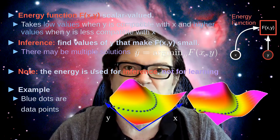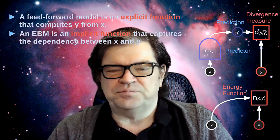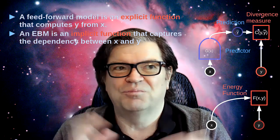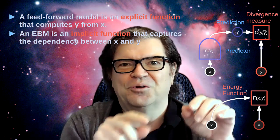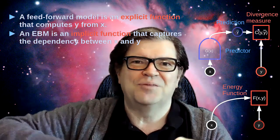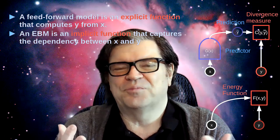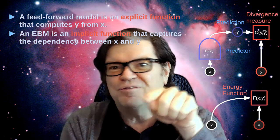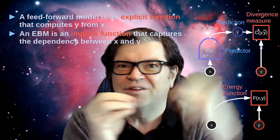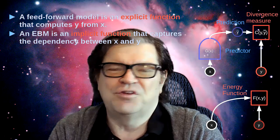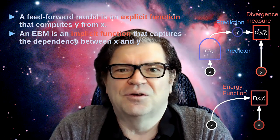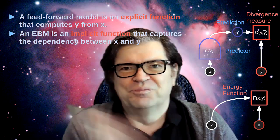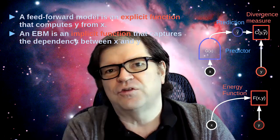If you want to build or train an energy-based model, we have to find a way to shape the energy surface so that it gives low energy to stuff we want and high energy to stuff we don't want. This idea of an implicit function is very common in mathematics and physics. Physicists invented something like this in the 18th century called the principle of least action. We can use this idea in the context of machine learning.